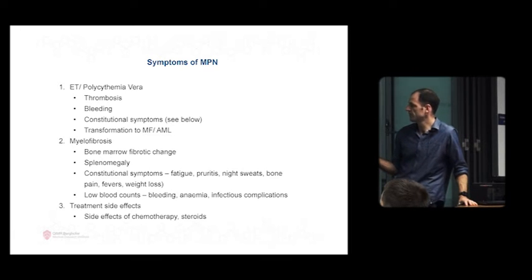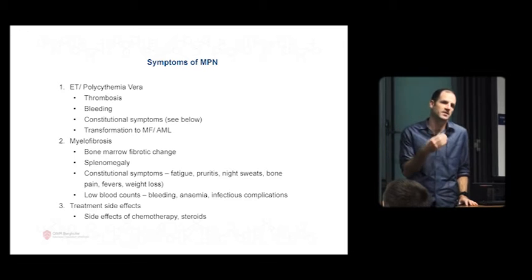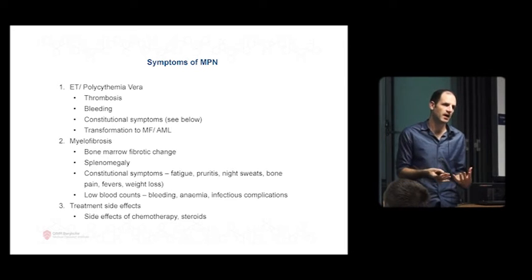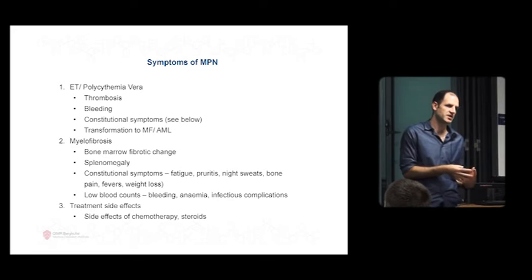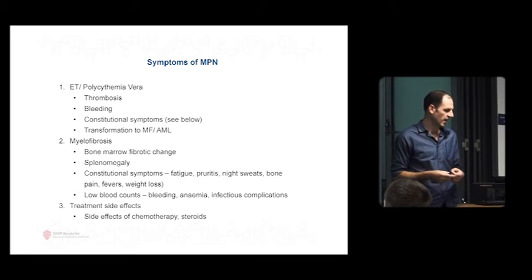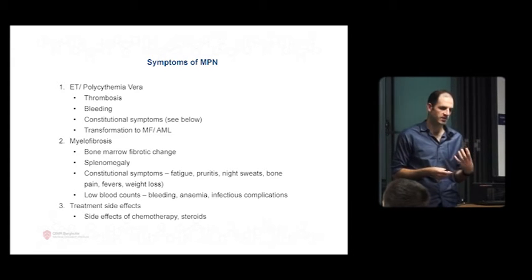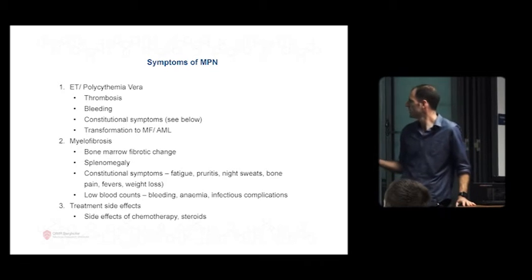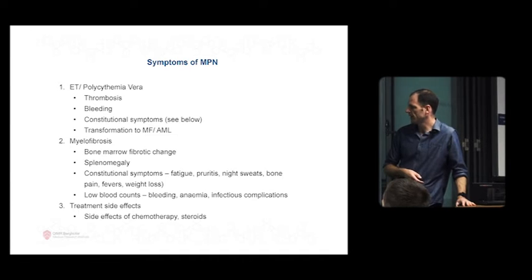There's a risk of transformation to myelofibrosis or acute myeloid leukemia. Myelofibrosis often presents with increasing spleen size and then a reduction in the other blood counts - either the platelet count causing bleeding, or anemia requiring transfusions, and infections caused by low white blood cell counts.